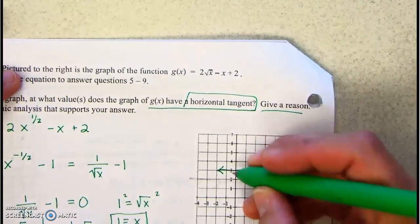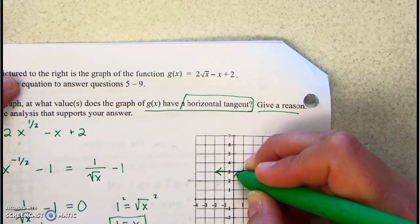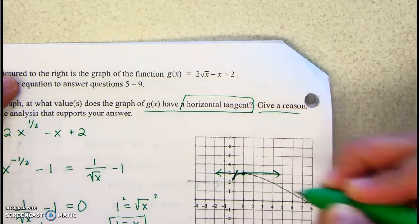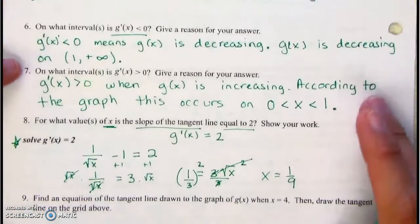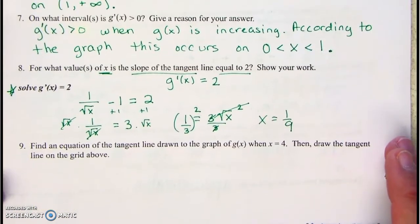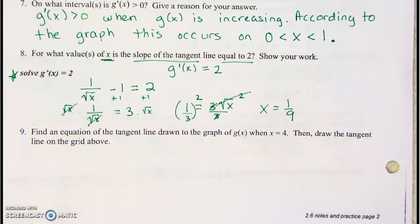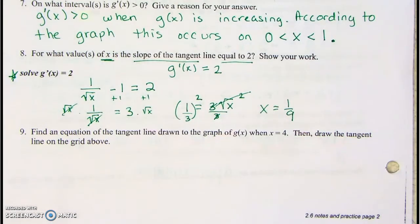x equals 1 ninth. Let's look at our graph — 1 ninth is really tiny right here. Does that look like it could be a slope of 2? Yeah, it does. Next: find the equation of the tangent line drawn to the graph of g when x equals 4, then draw the tangent line on the grid.